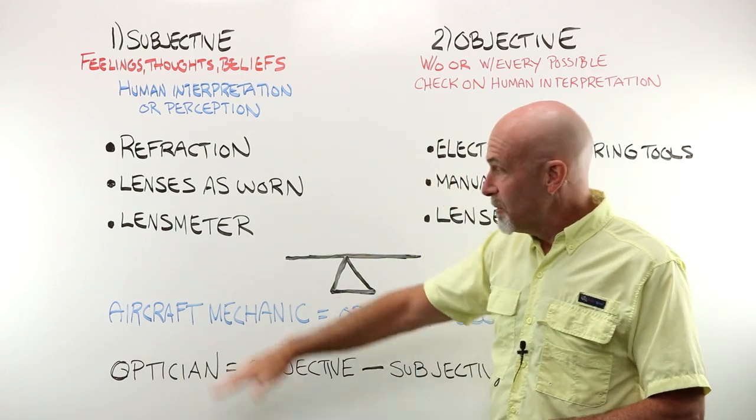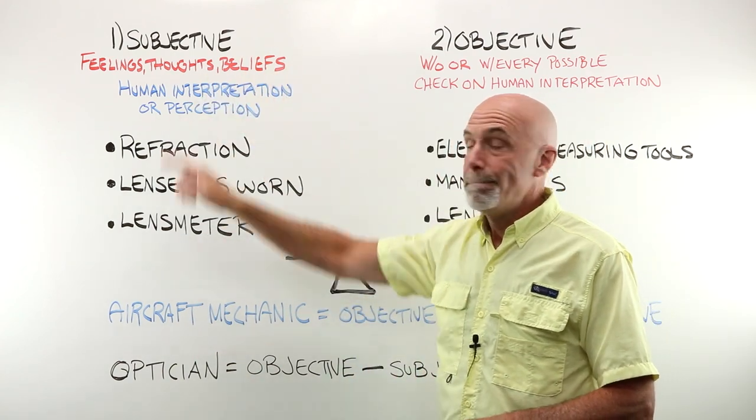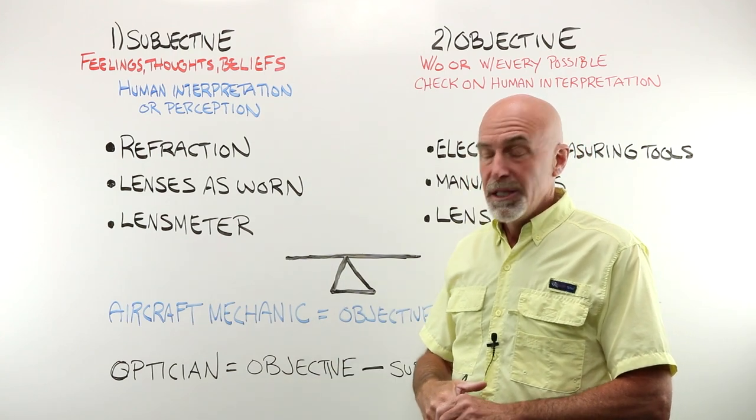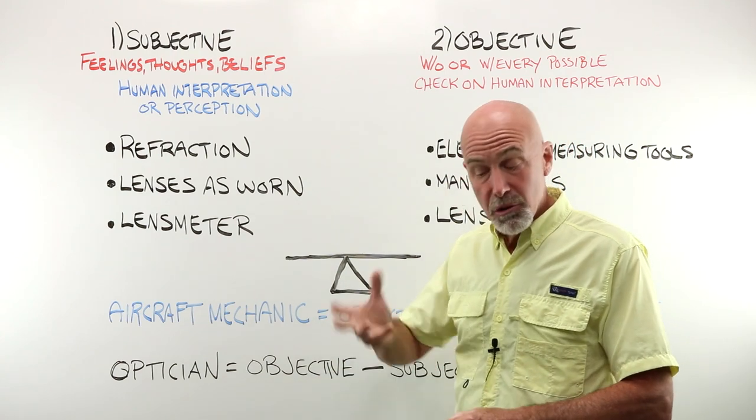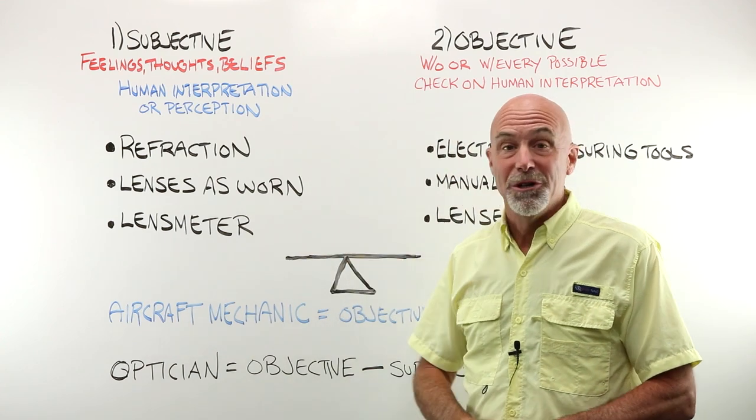A manual lens meter, the moment you put a human in front of it, becomes a subjective tool. If you're young, you can accommodate and you sit there and you rock that power drum back and forth. God only knows where you're going to end up. Subjective.